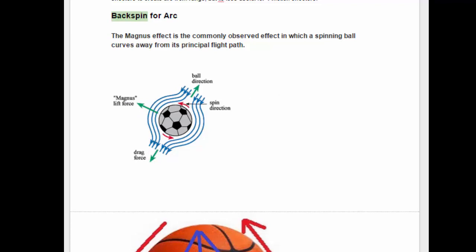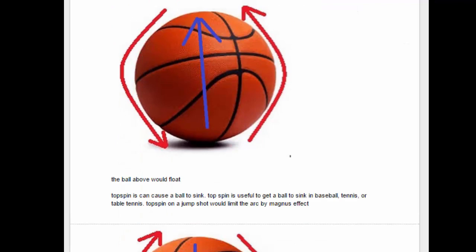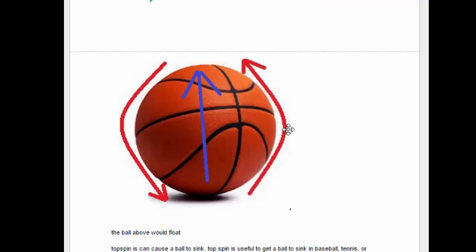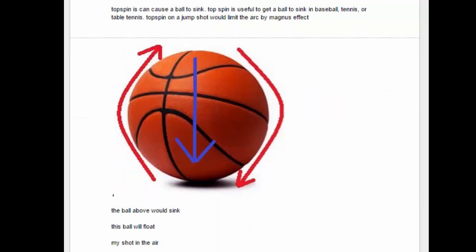So we think about this in terms of shooting a basketball. This ball has backspin. If it's sinking, the Magnus force is going to pull it up — this ball is going to float. Now similarly, if we throw a ball with topspin the ball is going to sink. Topspin is commonly used in baseball to throw a sinker, or in tennis or table tennis to keep the bounce of the ball low. However, if we're shooting a jump shot with topspin, Magnus force would pull it down and kill the arc.